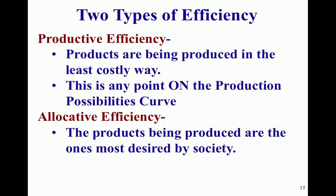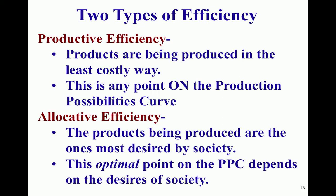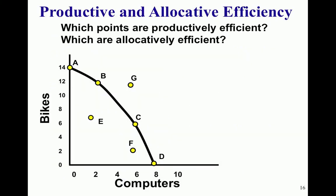Allocative efficiency is a little bit different. Right now at the beginning of the course we don't have a great way to measure allocative efficiency — we will a little bit later when we introduce the supply and demand model. When we say allocatively efficient, we mean that we're producing the right combination — the optimal point on the PPC depends upon the desires of society. We can measure that as economists, but we can't yet. So allocatively efficient is something that could be on the line.